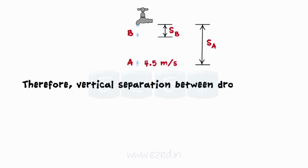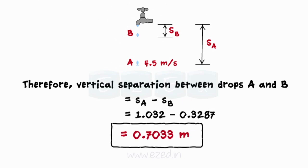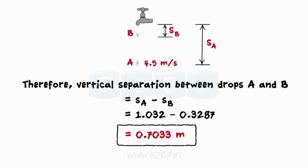So, the vertical separation between drop A and B is 0.7033 meters.